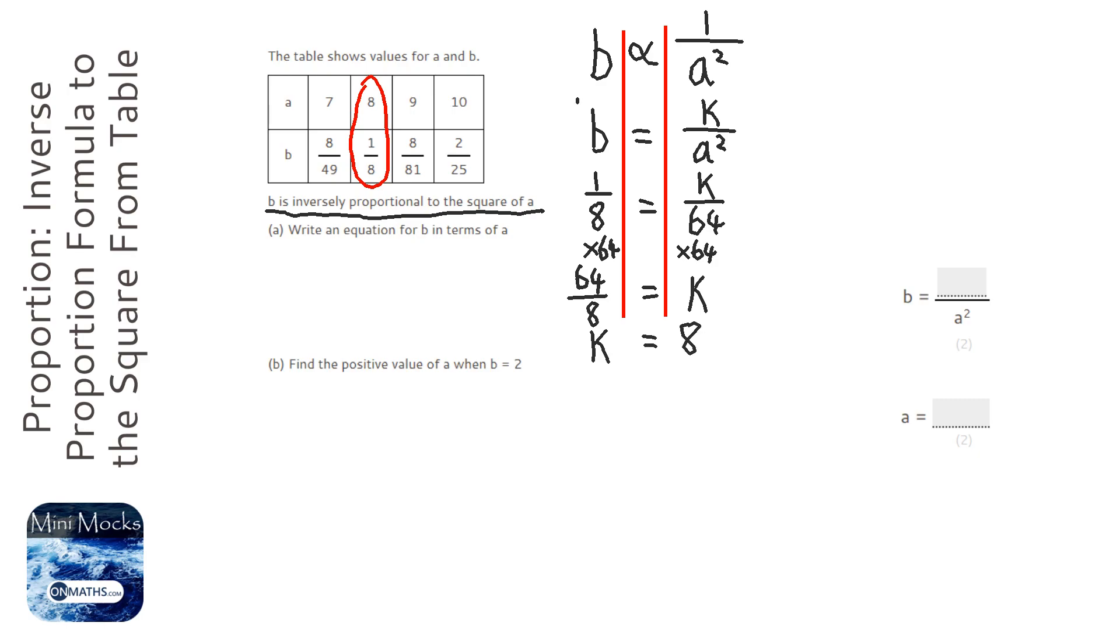So putting that back into this equation here, or formula here, it becomes this equation here. So b equals 8 over a squared.